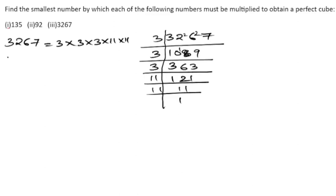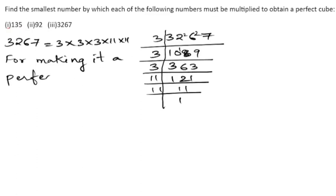So 3267 equals 3 × 3 × 3 × 11 × 11. In order to make it a perfect cube, we need to multiply the given number by 11, since 11 appears only twice and we need it three times. So the answer is 11.